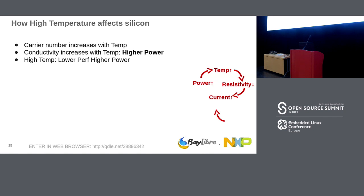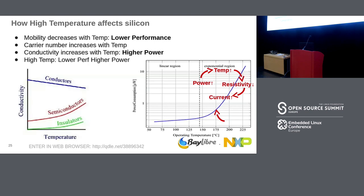How does temperature affect silicon? The carrier mobility decreases with temperature, giving lower performance — we've just seen that. But the number of carriers — the electrons — increases with temperature, which means higher conductivity and therefore higher power. So: high temperature means lower performance but higher power — really the worst case. Even more critically, at very high temperature, we enter thermal runaway: temperature increases, resistivity decreases, current increases, power increases, and so on. We should not go to that extremity.